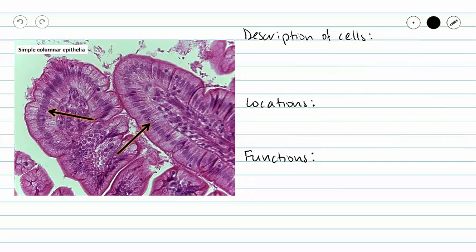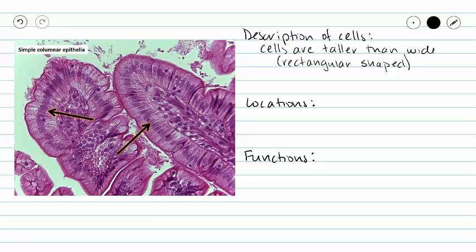In our description of the cells, we can say they are long or tall — column-shaped or rectangular-shaped. The nuclei are oval-shaped and tend to reside more towards the basal side of the cell.